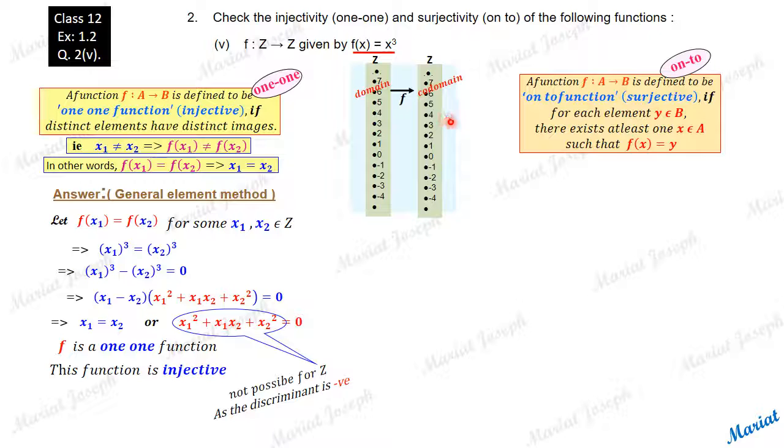In simple language, it is there shouldn't be any y left out in the co-domain which is not an image. Now how do we check? Let's go by the counter example method. First, we will go by general element method.